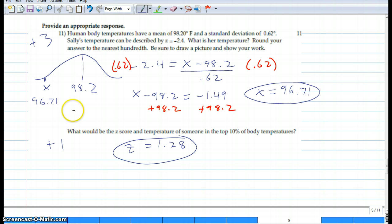If we multiply both sides by 0.62, we get negative 1.49. So x equals whatever their temperature is minus 98.2 equals negative 1.49. Add 98.2 to both sides. There it is, 96.71 would be that one.